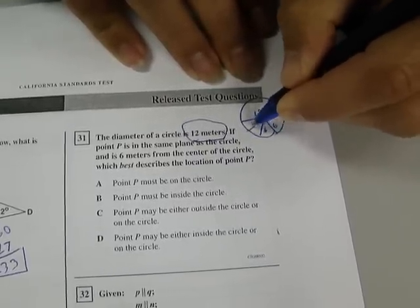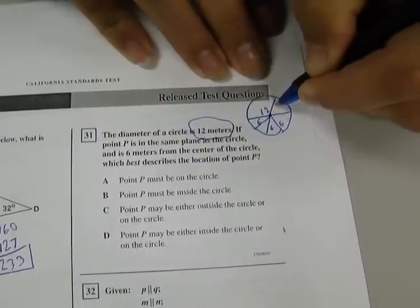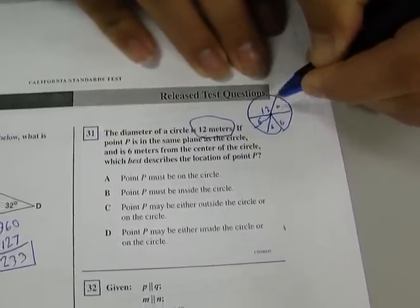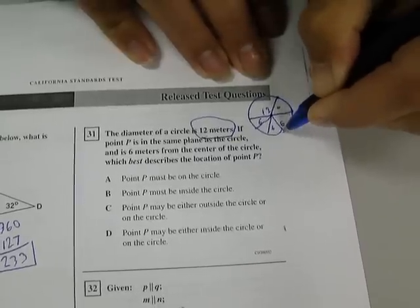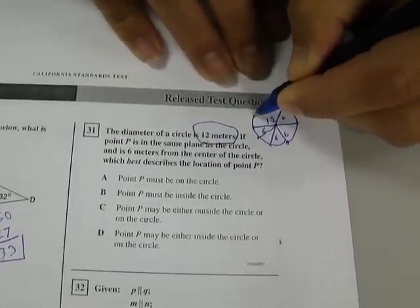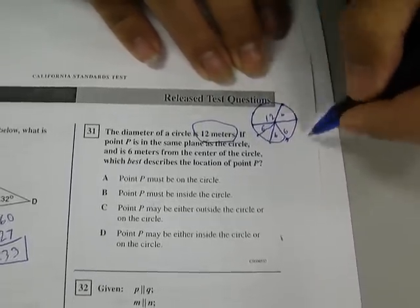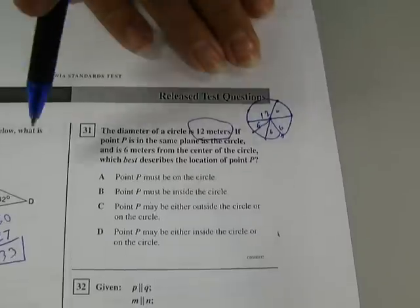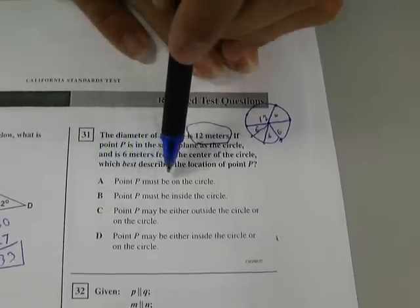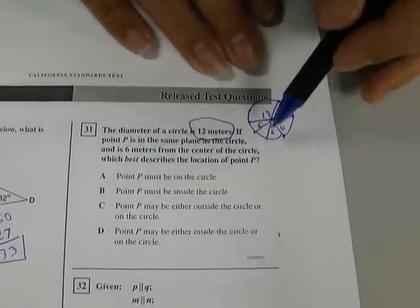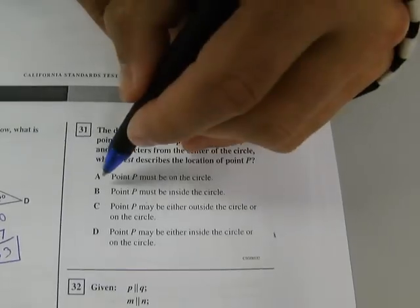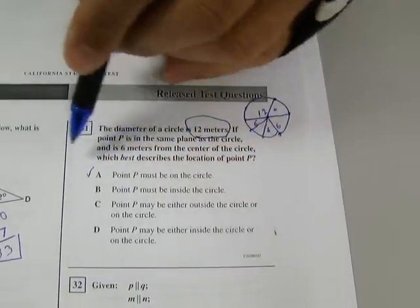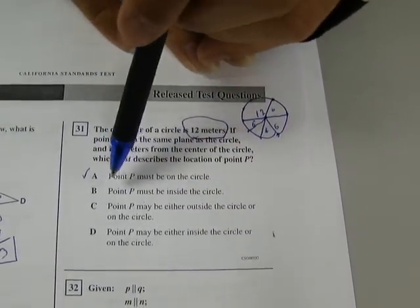And the radius, any one of these can be a radius because the radius is the distance from the center to the edge. So if P is six from the center, anywhere on this plane, it's always going to end up exactly on the edge of the circle. So any one of these points could be P, but P will always be on the edge of the circle. So let's read our choices. Point P must be on the circle. On the circle is another way of saying on the edge of the circle. So I'm going to go with, this is probably my answer, but I'll keep reading just to see if something better shows up.